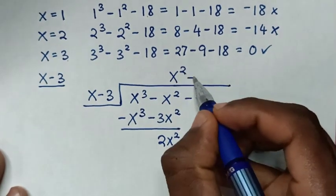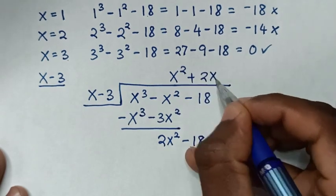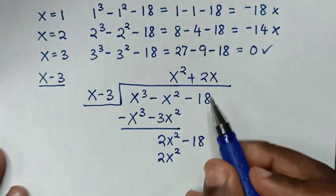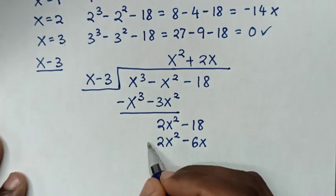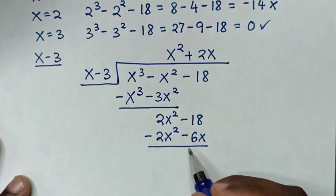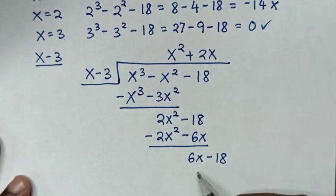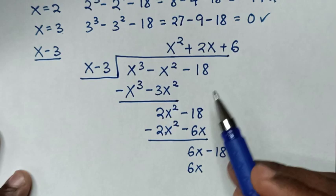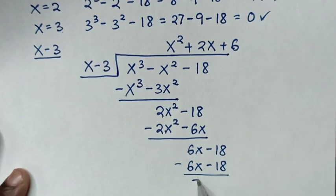To get 2x² we multiply by 2x. So 2x times x is 2x², and 2x times negative 3 is negative 6x. Subtracting gives 0, and negative and negative gives positive 6x, then minus 18. To get 6x we use 6: 6 times x is 6x, 6 times negative 3 is negative 18, then subtracting gives 0.